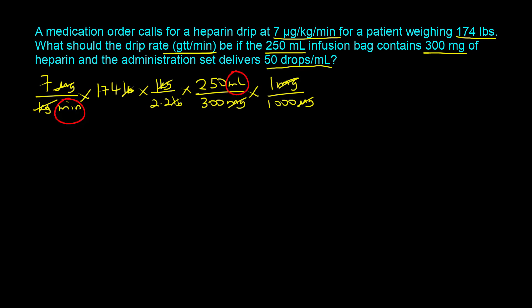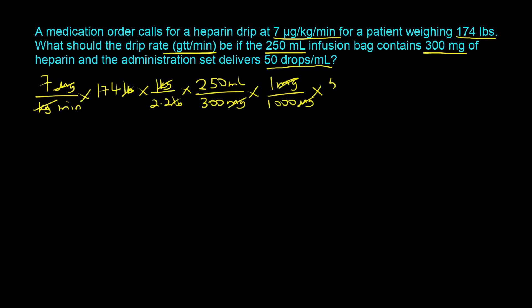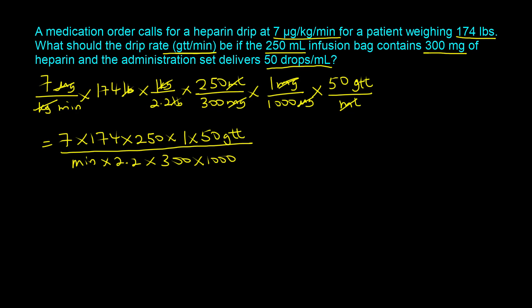We are now in milliliters per minute, but we need drops per minute — that's where the calibration factor becomes ultra important. We take 50 drops (GTT) per 1 milliliter, so the milliliter cancels out and we are now in drops per minute. Taking all the numbers in the numerator: 7 × 174 × 250 × 1 × 50, divided by everything in the denominator: 2.2 × 300 × 1,000. If we do the math correctly, we end up with 23 drops per minute.